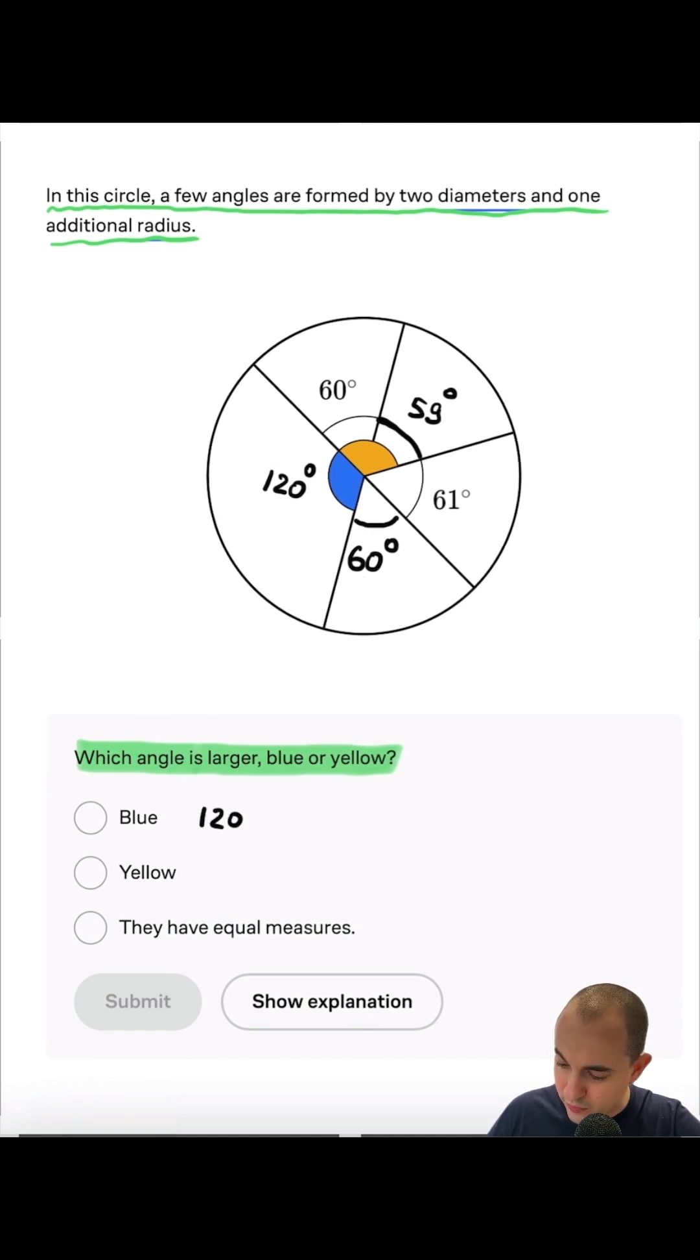Now we can see that the blue one is 120 degrees. The yellow one is 119 degrees. That's why the answer is blue.